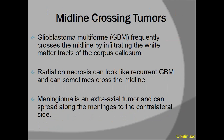Talking about midline-crossing tumors — also called butterfly tumors — glioblastoma is the classic midline-crossing tumor. It frequently crosses the midline by infiltrating the white matter tracts of the corpus callosum. Radiation necrosis can also look like recurrent glioblastoma and sometimes can cross the midline. Meningioma, an extra-axial tumor, can also spread along the meninges to the contralateral side. The butterfly glioma or GBM is the most common midline-crossing tumor.